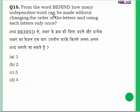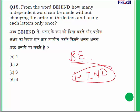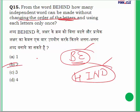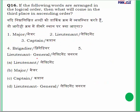Question 15: How many independent words can be made from the word 'BEHIND' without changing the order of letters and using each letter only once? Two words can be found: 'BE' and 'HIND'. So the answer is 2.